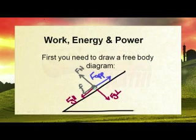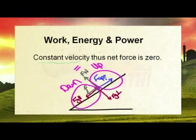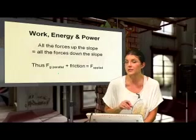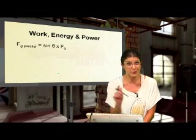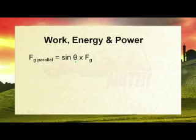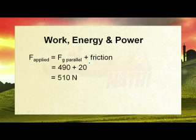Because the wheelchair travels at constant velocity, all forces down the slope equal all forces up the slope — net force is zero. So F applied equals friction plus Fg parallel. Friction is given as 20 Newtons. Fg parallel = sinθ × Fg = sin(30°) × (100 × 9.8) = 490 Newtons. Therefore, F applied = 490 + 20 = 510 Newtons.